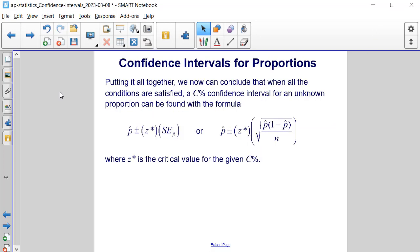If we put all of the information that we've gathered together, we can conclude that when all of the conditions are satisfied, a C% confidence interval for an unknown proportion can be found using the formula: p-hat plus or minus z* times the square root of p-hat times 1 minus p-hat, all divided by n, inside of that square root. Where z* is the critical value for the given C% in the confidence interval.